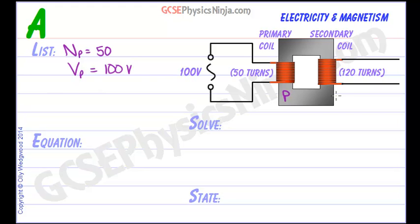On the secondary side, I'll put an S there for secondary, we know that the number of turns is 120. I haven't put any units on those because they're just the number of turns. The voltage on the secondary is what we're trying to find, so I'll put that as a question mark, but we'll use VS in the equations.